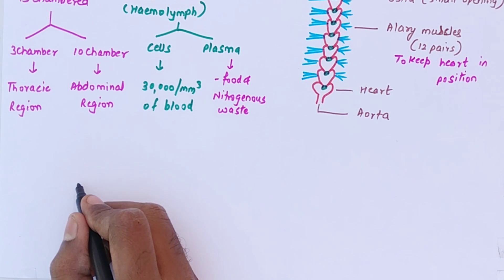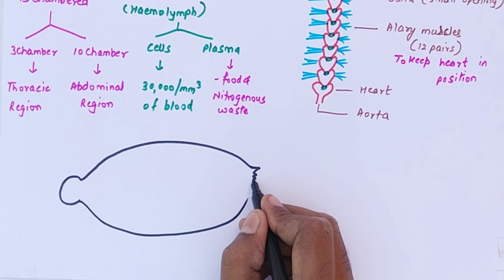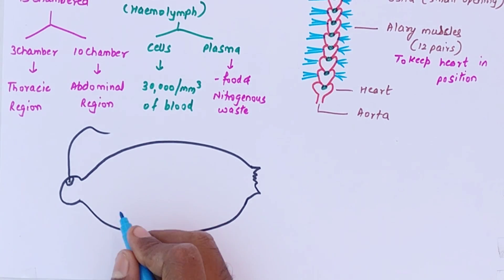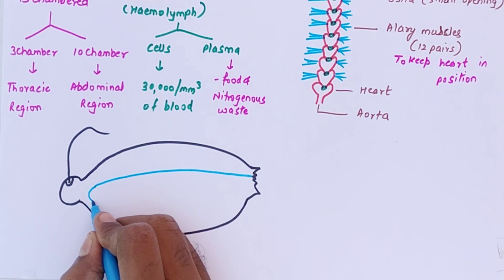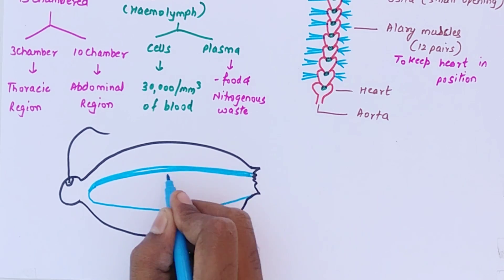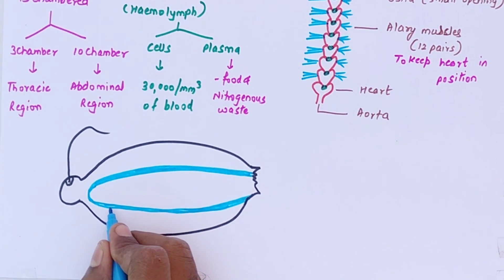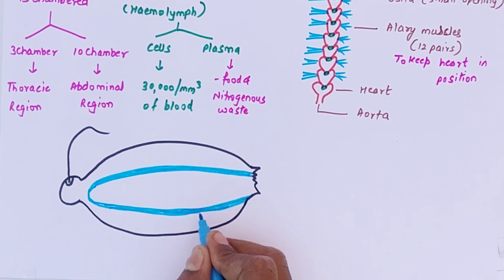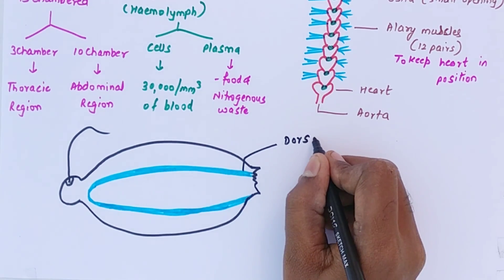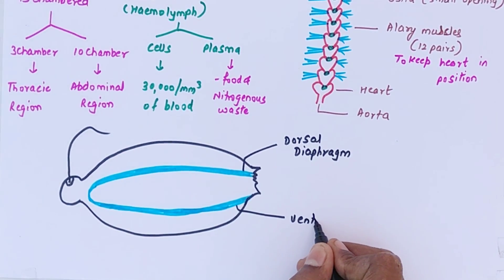Now I will be drawing a side view of the circulatory system so it may be easy to understand. The most important part is that the cockroach has two diaphragms — we have only one, but cockroach has two: the dorsal diaphragm and the ventral diaphragm. Because of these two diaphragms, the cockroach's body is divided into three chambers.